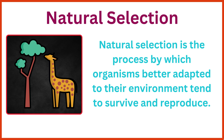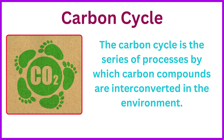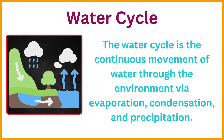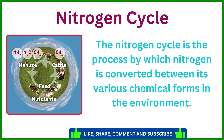Natural selection is the process by which organisms better adapted to their environment tend to survive and reproduce. The carbon cycle is the series of processes by which carbon compounds are interconverted in the environment. The water cycle is the continuous movement of water through the environment via evaporation, condensation, and precipitation.